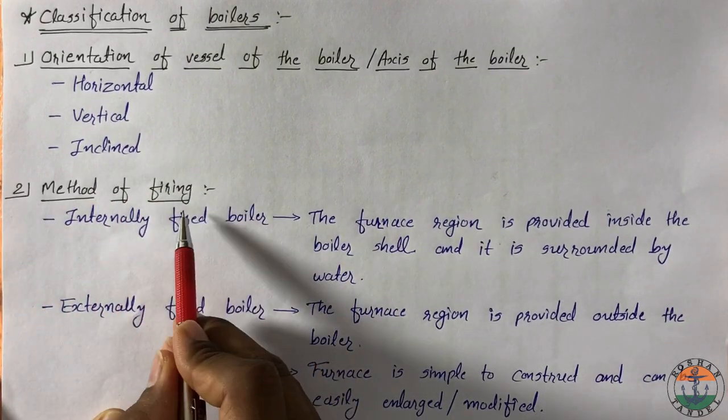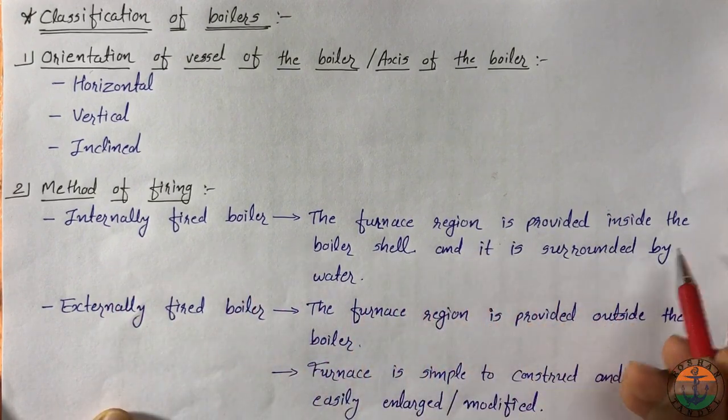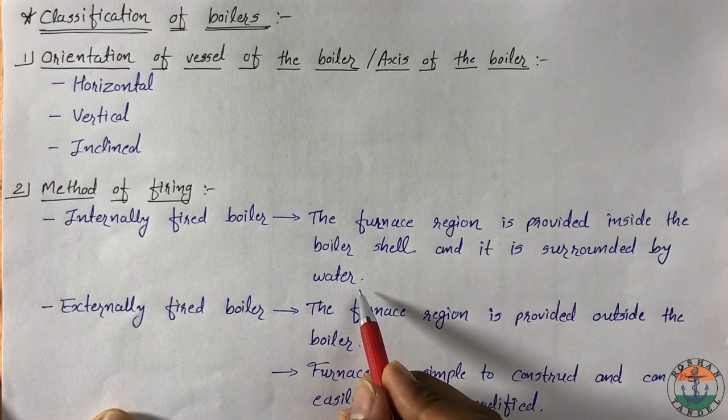Second is method of firing. In internally fired boiler, furnace region is provided inside the boiler shell and it is surrounded by water.